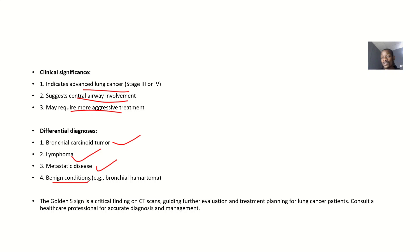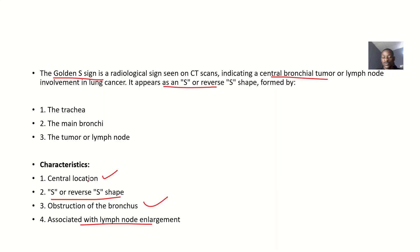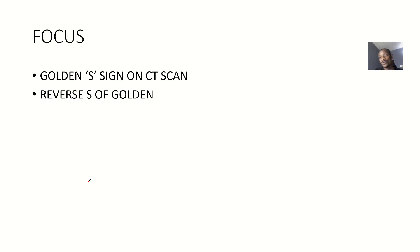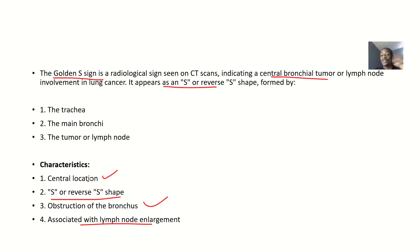Before getting to imaging, you would have already examined the patient through physical examination and laboratory tests, which helps rule out these differential diagnoses. That covers the Golden S sign seen on CT scans, also known as the reverse S of Golden — including its components, meaning, and characteristics.